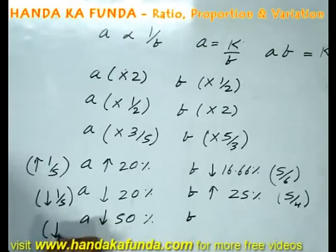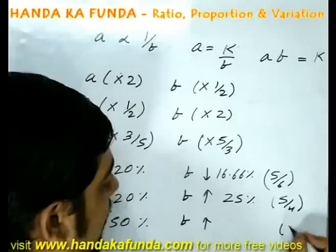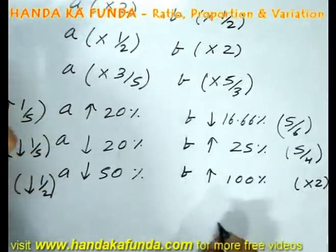If A falls by 50% or A falls by half, it becomes half of the original. In that case, B will become double of the original or it will increase by 100%.